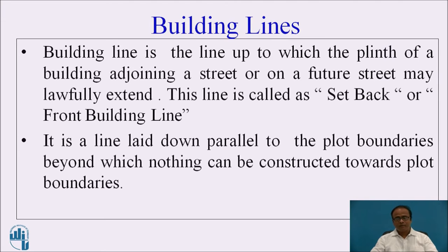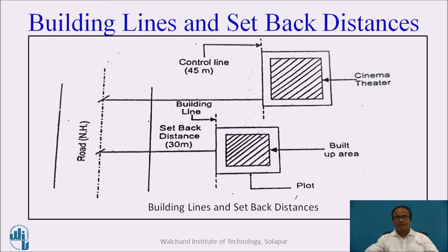Building line is the line up to which the plinth of a building adjoining a street or a future street may lawfully extend. This line is called the setback or front building line. It is a line laid down parallel to the plot boundaries beyond which nothing can be constructed towards the plot boundaries. For industrial buildings, this is called the control line, and for residential buildings, it is called the building line.